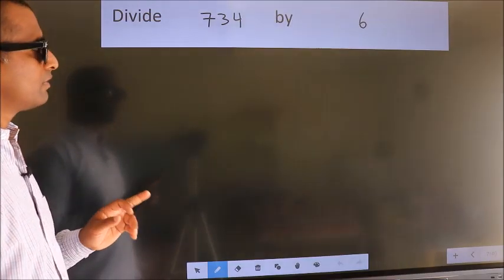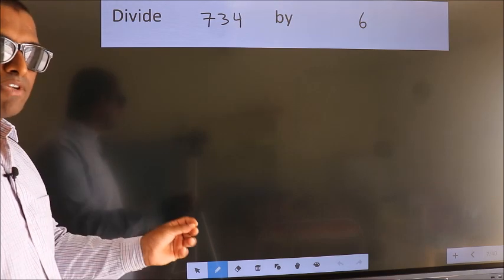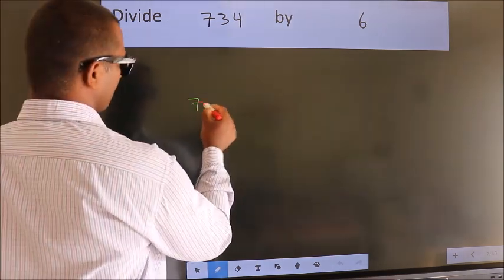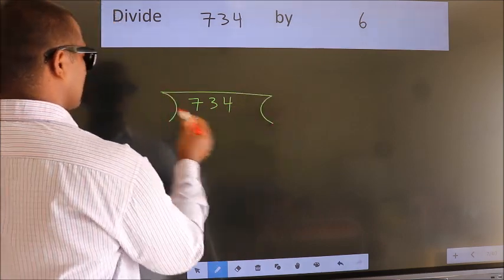Divide 734 by 6. To do this division, we should frame it in this way. 734 here, 6 here.